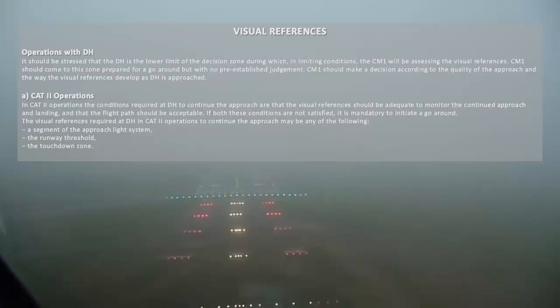The visual references required at Decision Height in CAT 2 Operations to continue the approach may be any of the following: a segment of the approach light system, the runway threshold, or the touchdown zone.